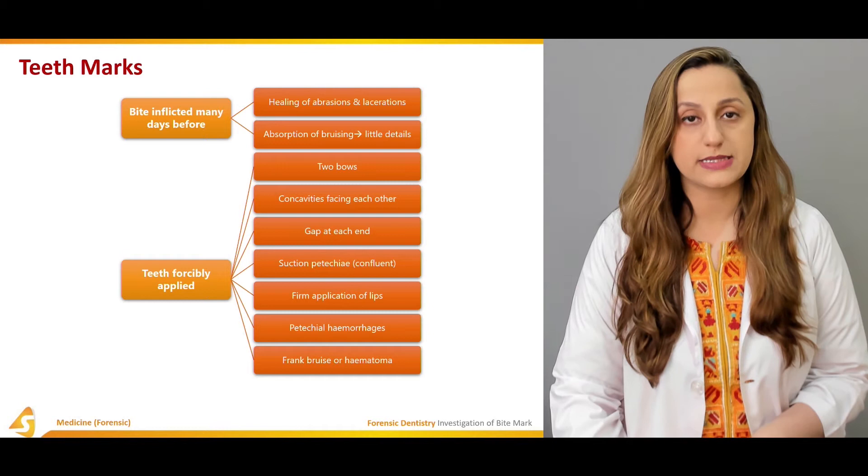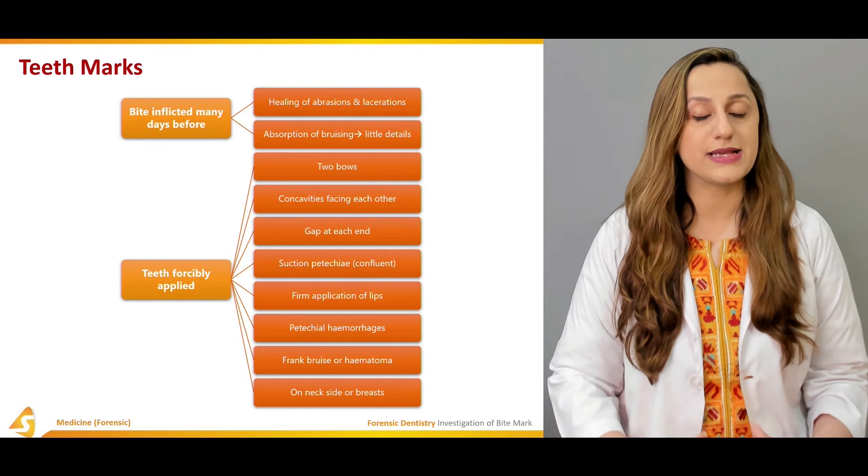Frank bruises or hematomas, if found, are documented in detail. On the sides of the neck and breasts, they signify that it was a sexual assault.